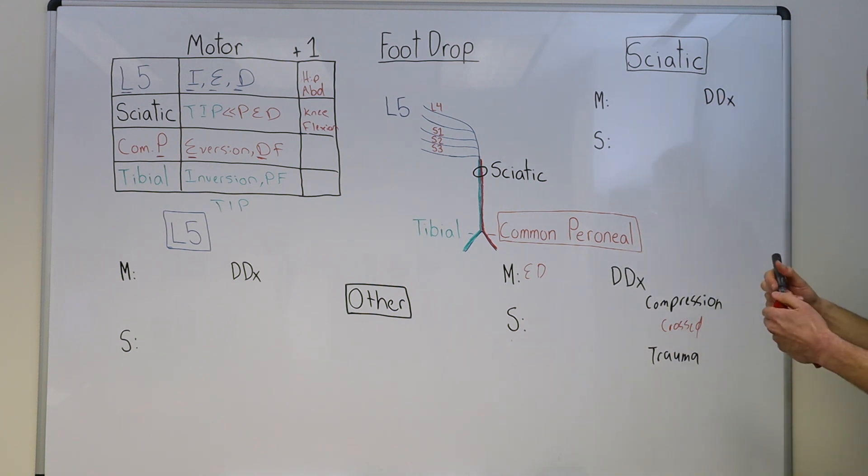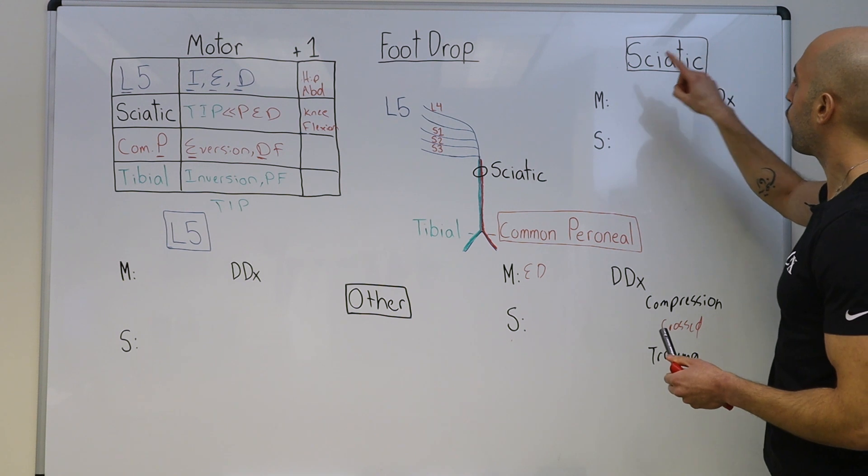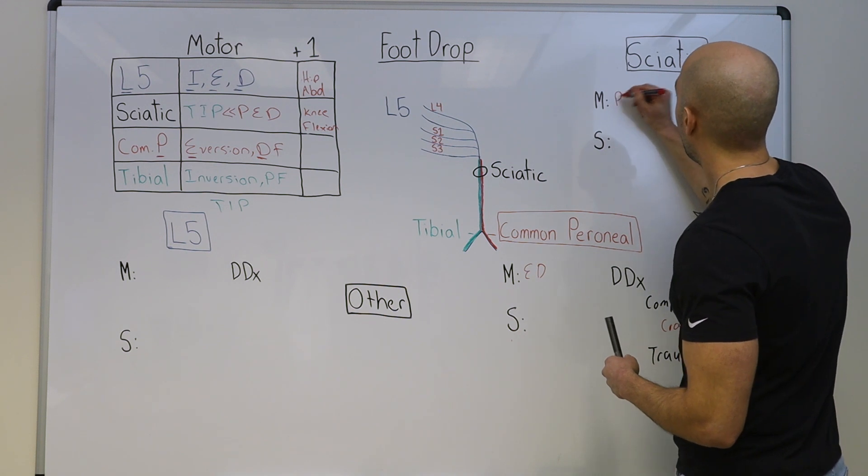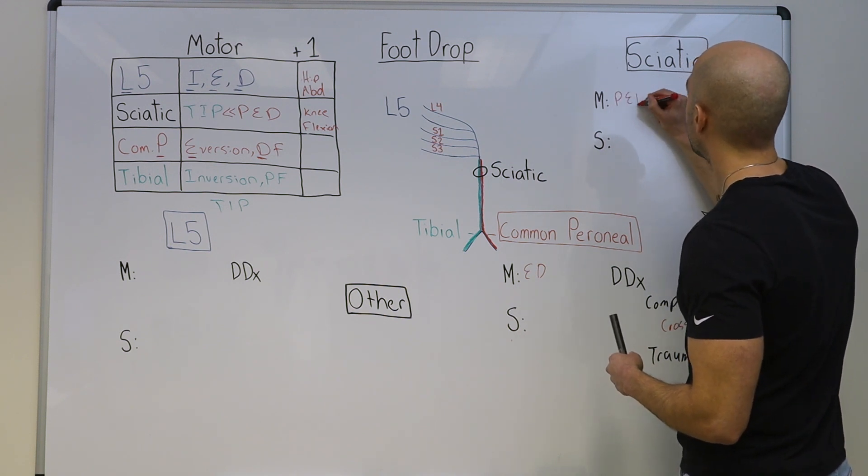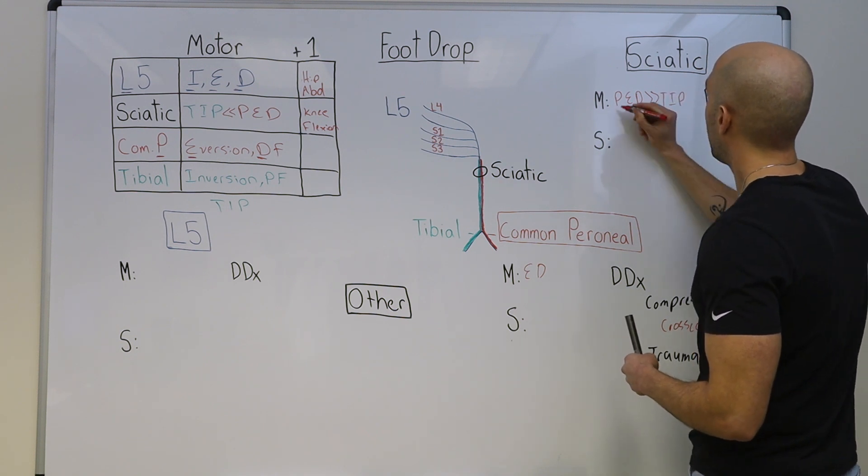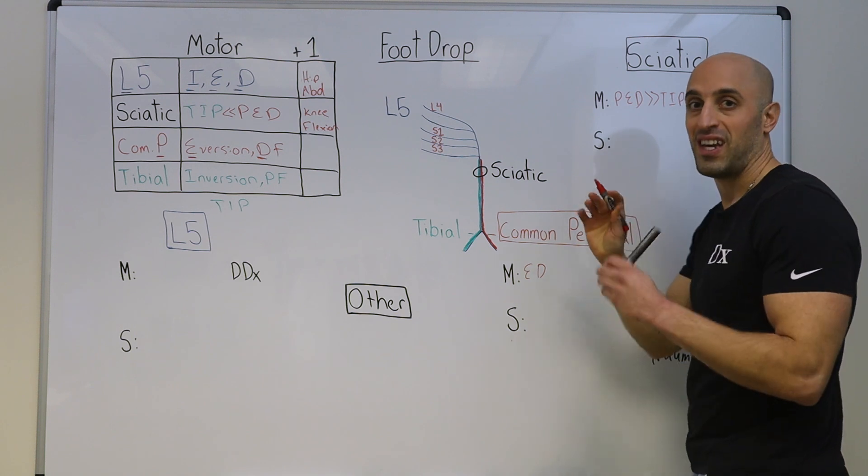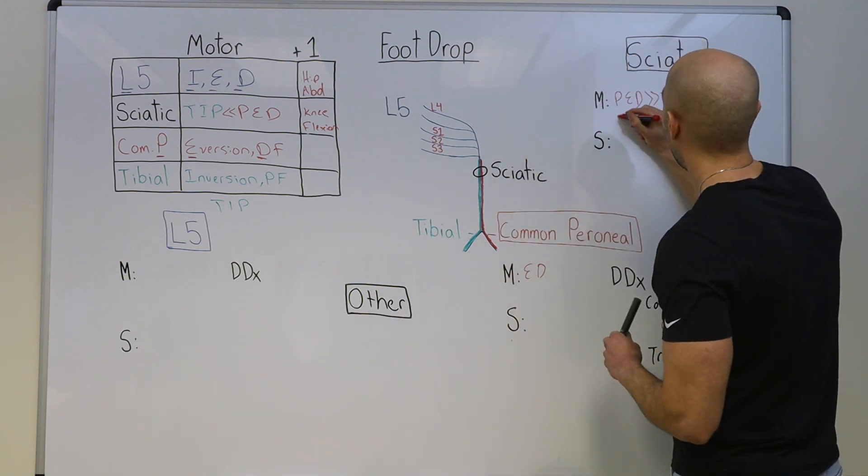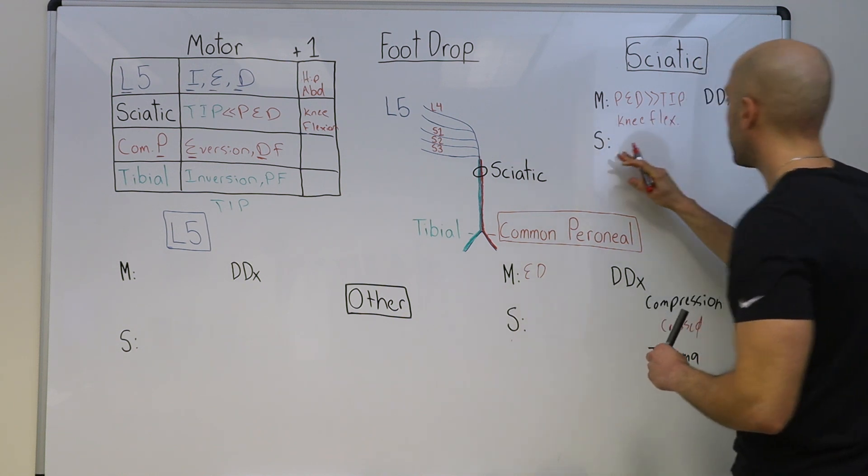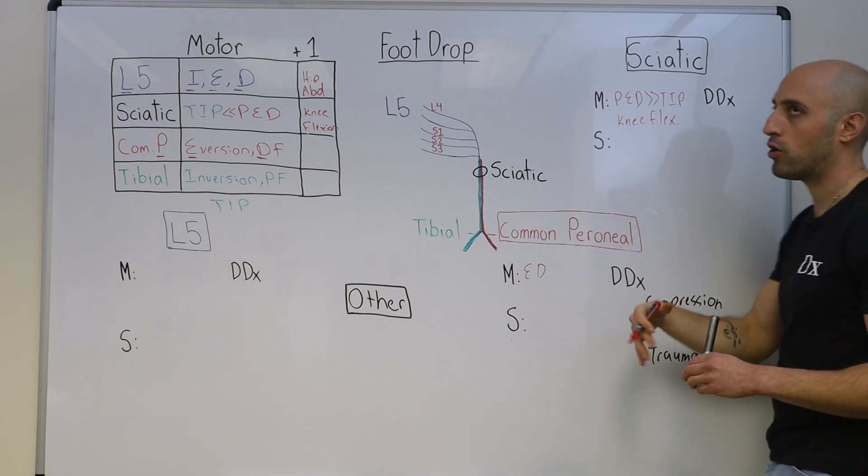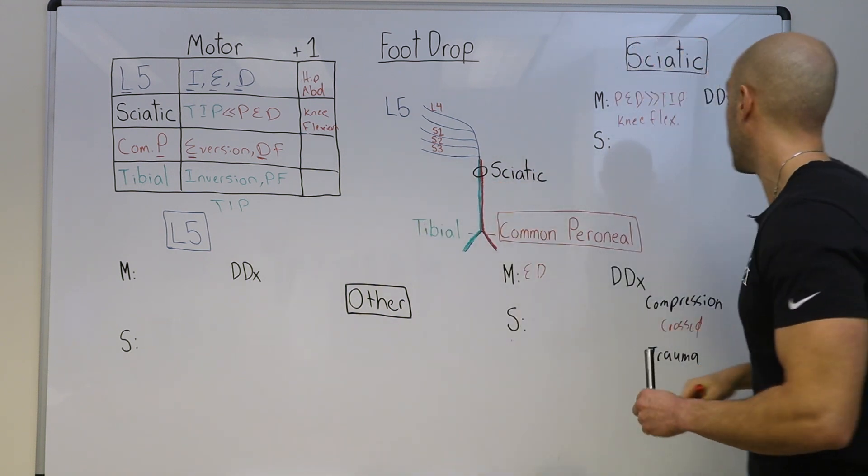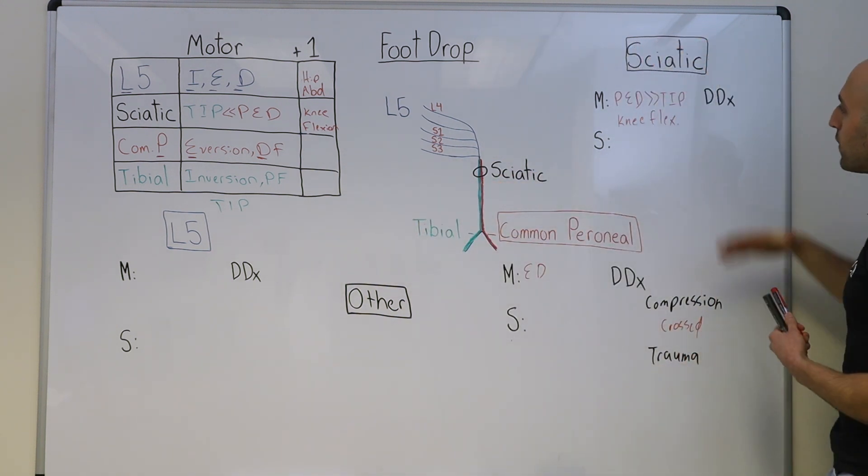Let's now discuss sciatic neuropathy. For sciatic neuropathy, what are the motor deficits? We know it's peroneal, which means eversion and dorsiflexion, much more common than the tibial inversion and plantar flexion. And we also notice the sciatic nerve is involved in knee flexion. So all of these may be impaired. The sensory is very similar to the common peroneal, the lateral calf, the dorsum of the foot, but also can involve the plantar aspect of the foot. What's the differential diagnosis?